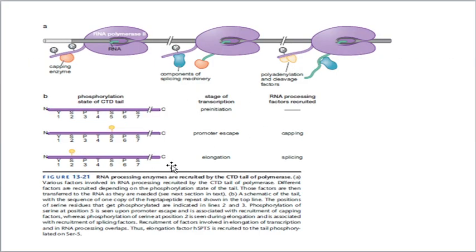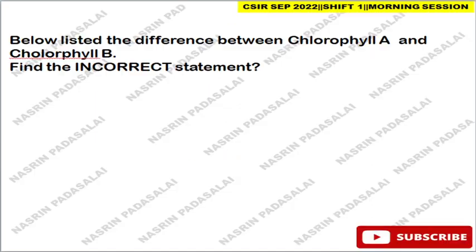Regarding CTD phosphorylation states: phosphorylation of serine at position 5 is seen upon promoter escape and is associated with recruitment of capping factors, allowing capping to occur. Phosphorylation of serine at position 2 is generally seen during elongation and is associated with recruitment of splicing factors.